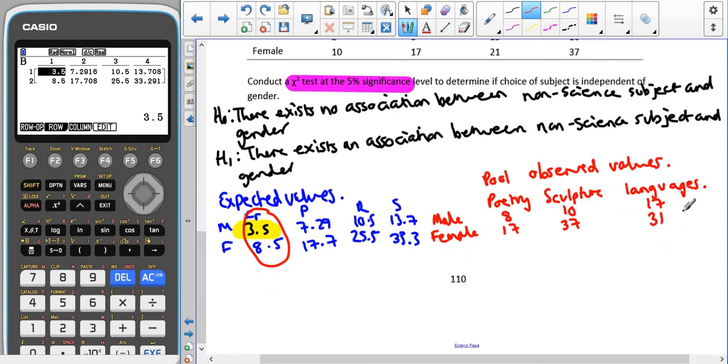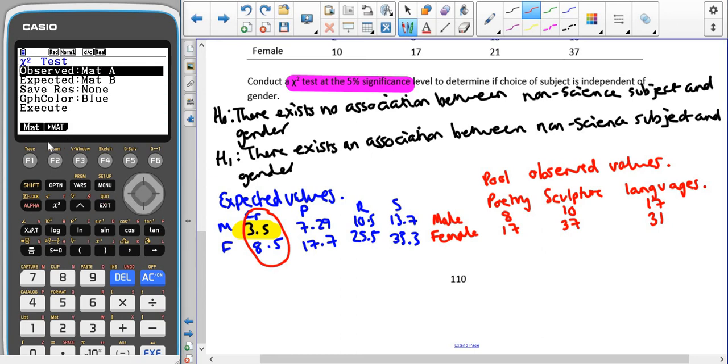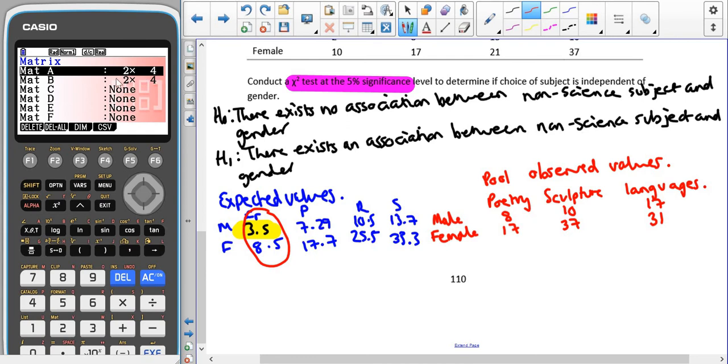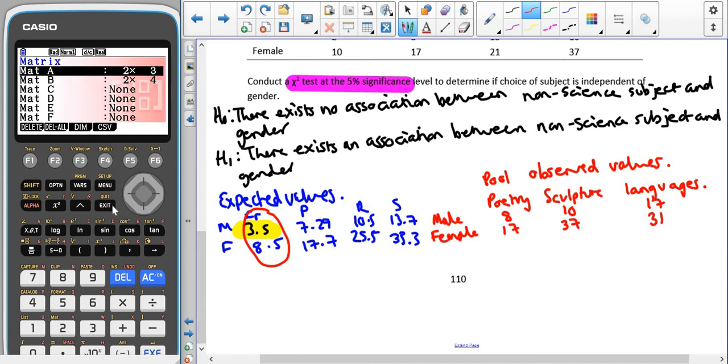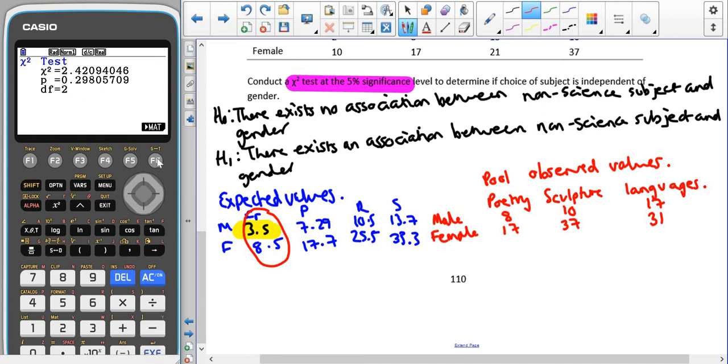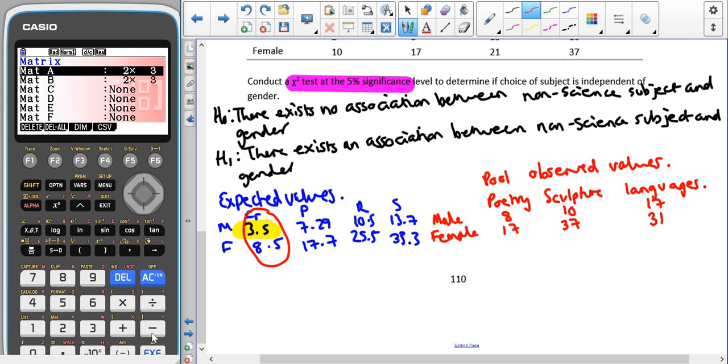So now, for the rest of the question, we are going to be using this data here, not the data that was given to us in the question. So we have to come all the way back, go into Aromat again. And now, instead of a 2 by 4 table, we have a 2 by 3 table. Then we need to enter our values. So we have 8, 10, 17, 17, 37 and 31. Then we go exit, exit, exit, arrow map first. Go down to matrix B.